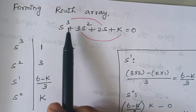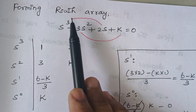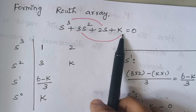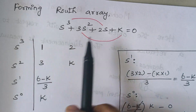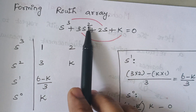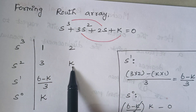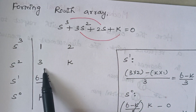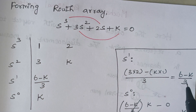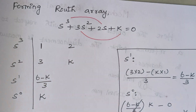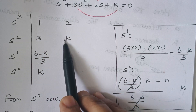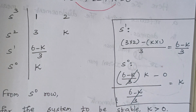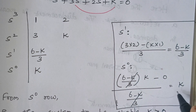We start with s³. Joining all odd powers: s³ row gets coefficients 1 and 2; s² row gets 3 and K. For the s¹ row: (3×2 − K×1) / 3 = (6 − K) / 3. For the s⁰ row: [(6−K)/3 × K − 0×3] / [(6−K)/3], where the zero terms cancel, giving simply K.